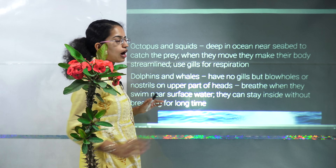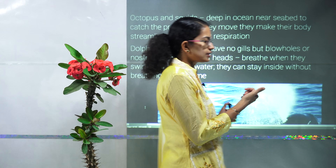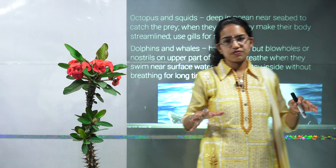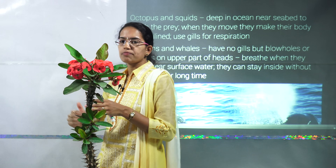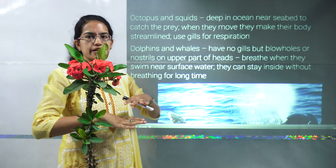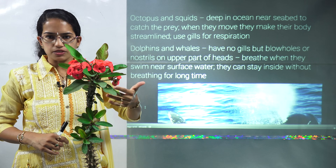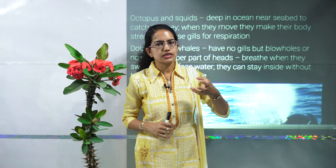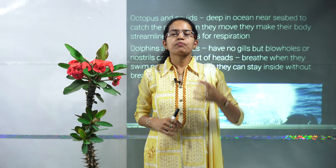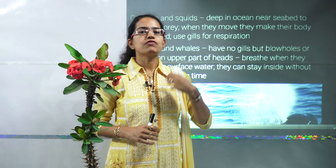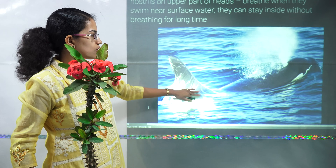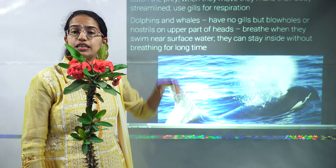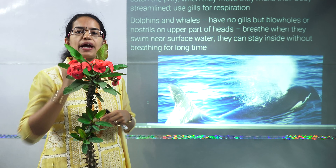Aquatic regions: fishes have streamlined bodies, but octopus and squids live in very deep areas and do not have a streamlined body permanently — they convert their body into a streamlined fashion when swimming. Most aquatic animals use gills for respiration. However, dolphins and whales, classified under mammals, have lungs for respiration — they come to the surface, exchange air through nostrils, and can then stay deep underwater for very long durations.